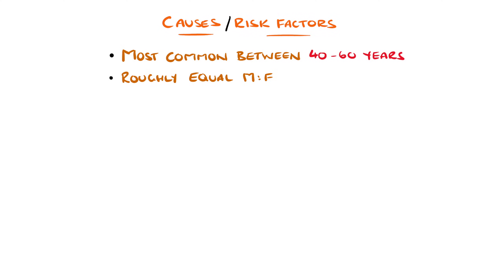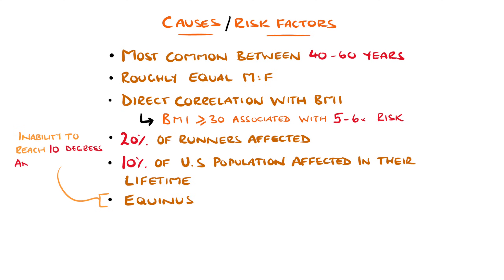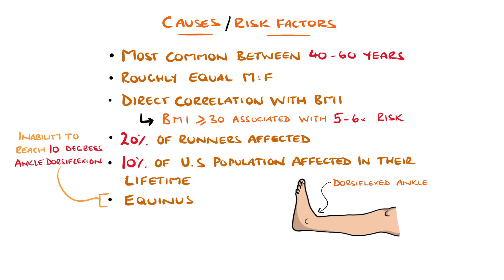There is a direct correlation with BMI, where a BMI above 30 is associated with a 5 to 6 times increase in risk. Runners are also at an increased risk, with up to 20% of them thought to be affected. It is estimated that 1 in 10 people in the United States will develop it at some point in their lives. Another risk factor is gastrocnemius or gastrosoleus equinus, where there is an inability to reach 10 degrees of dorsiflexion at the ankle joint, which leads to increased strain on the plantar fascia during walking, predisposing to fasciitis. Others include pes cavus or pes planus, meaning feet with a particularly high or low medial longitudinal arch, respectively. Prolonged standing is another risk factor.